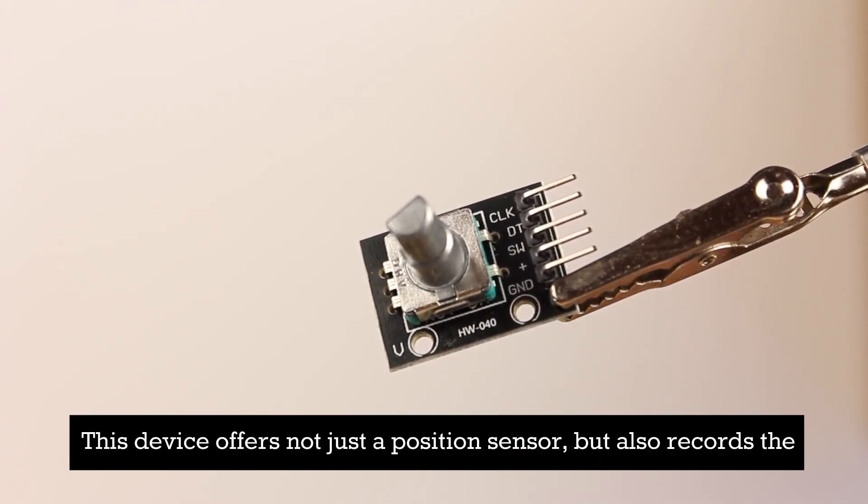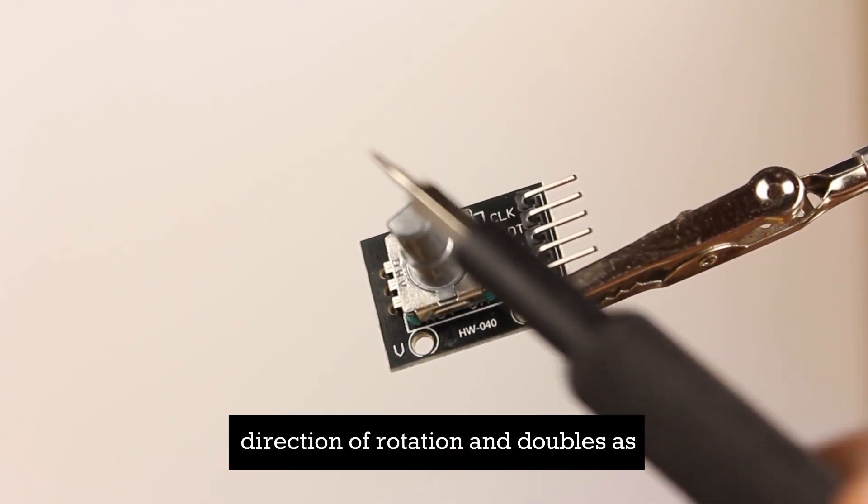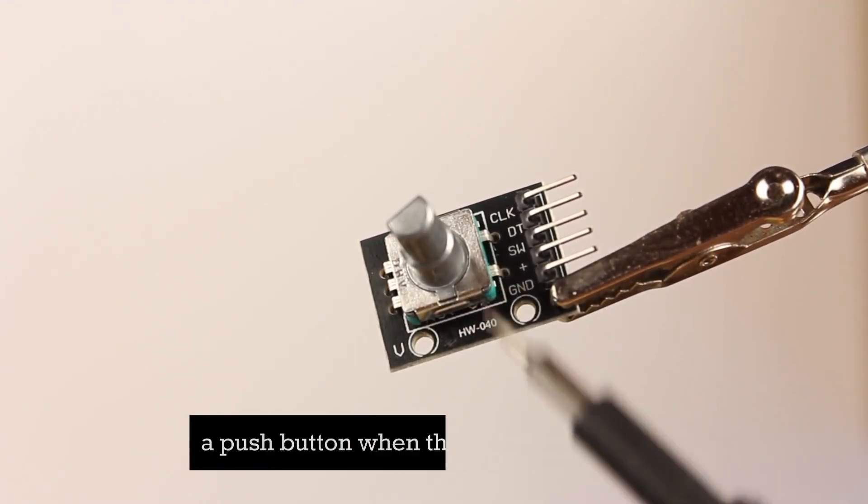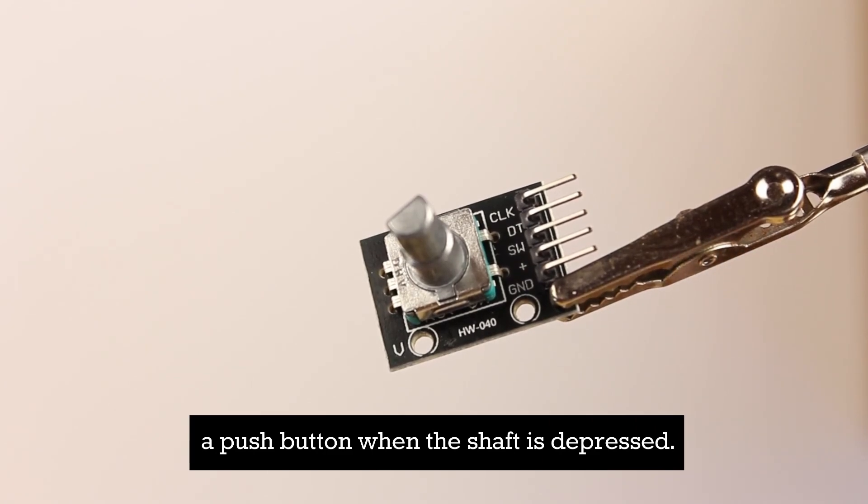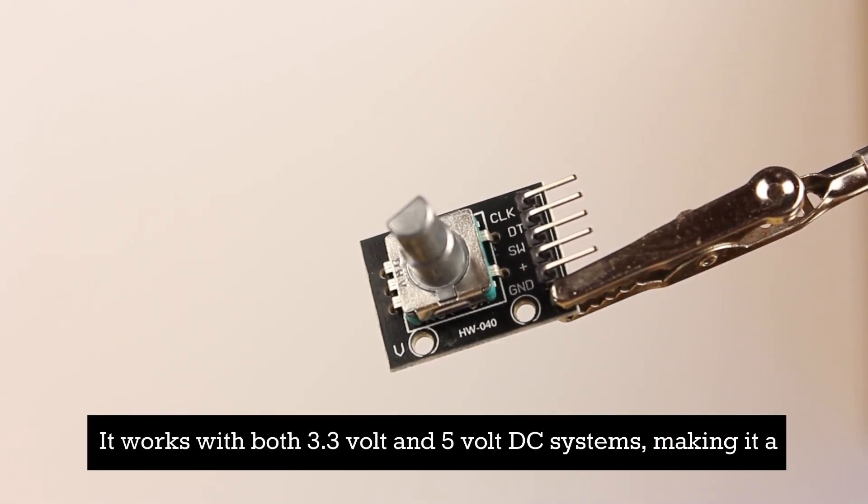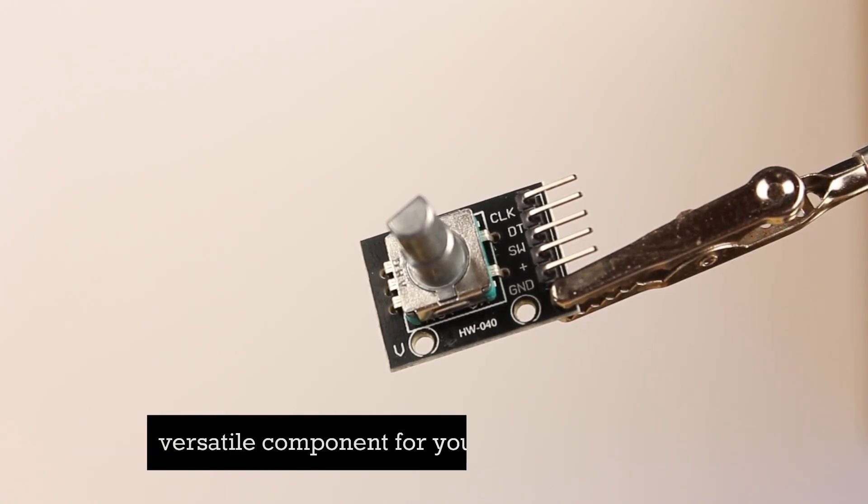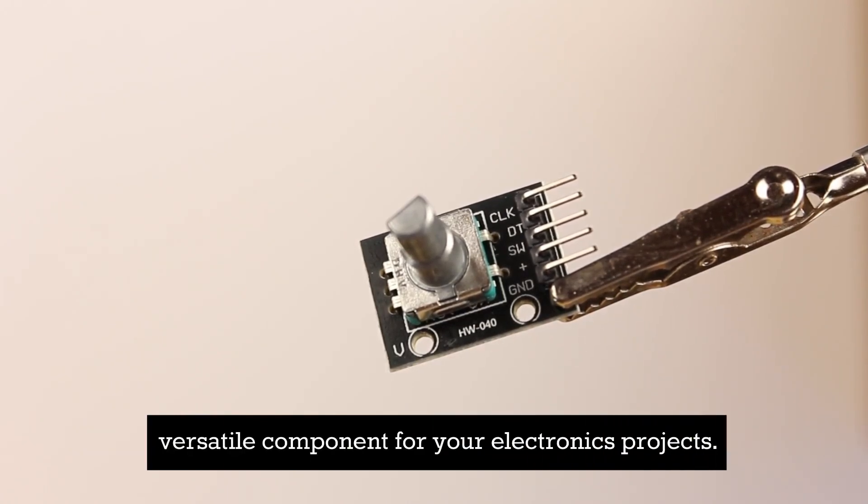This device offers not just a position sensor, but also records the direction of rotation and doubles as a push button when the shaft is depressed. It works with both 3.3 volt and 5 volt DC systems, making it a versatile component for your electronics projects.